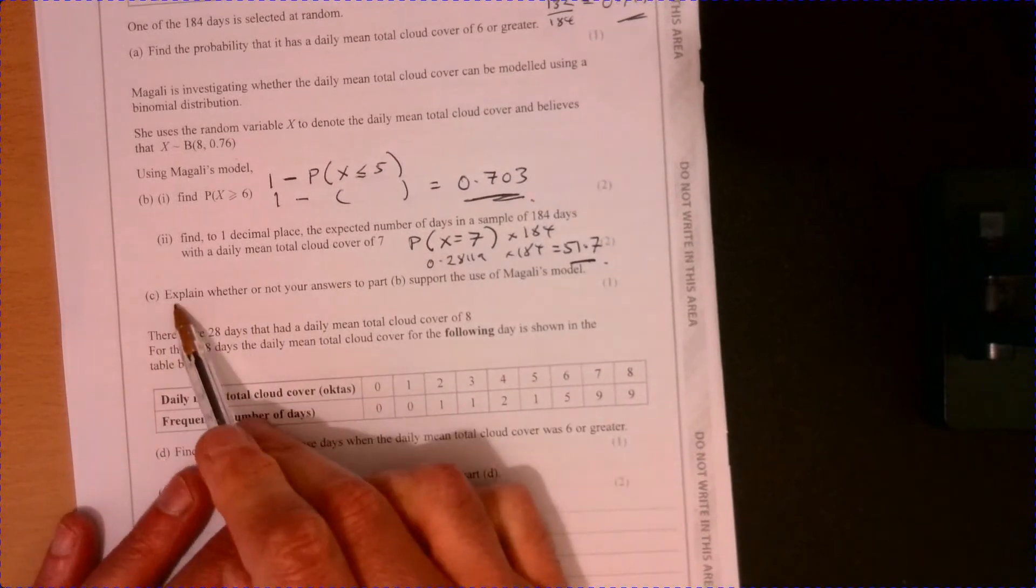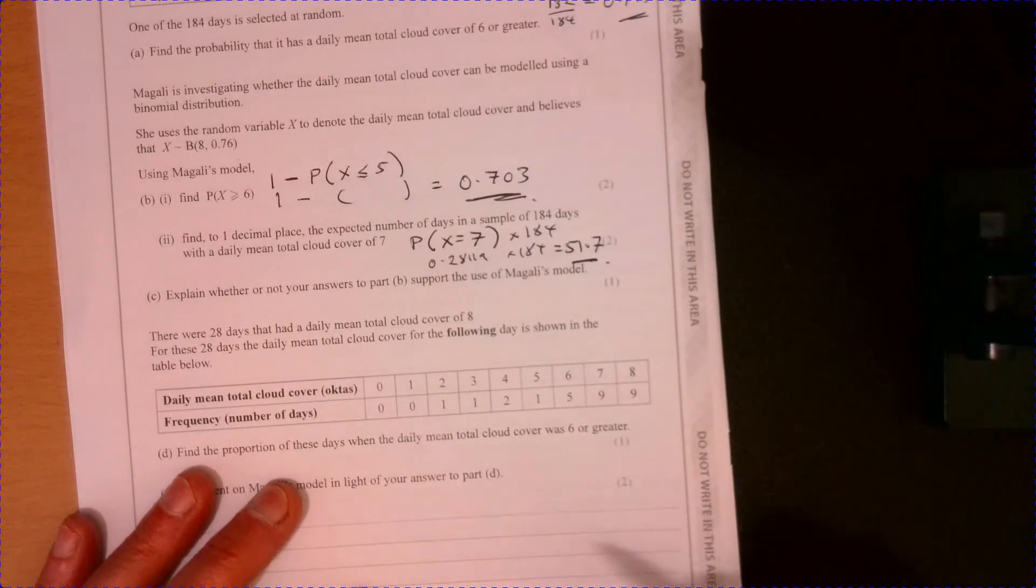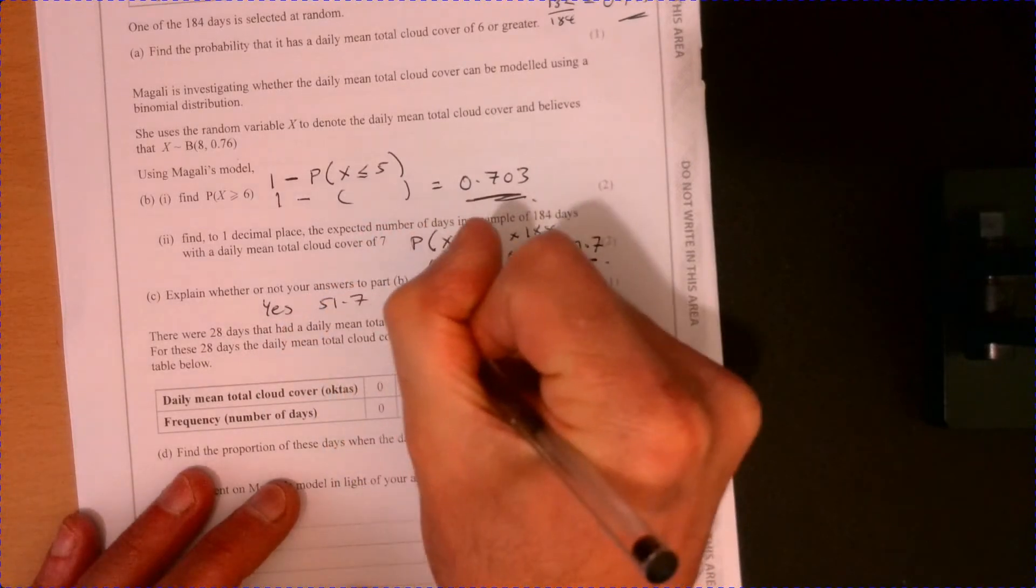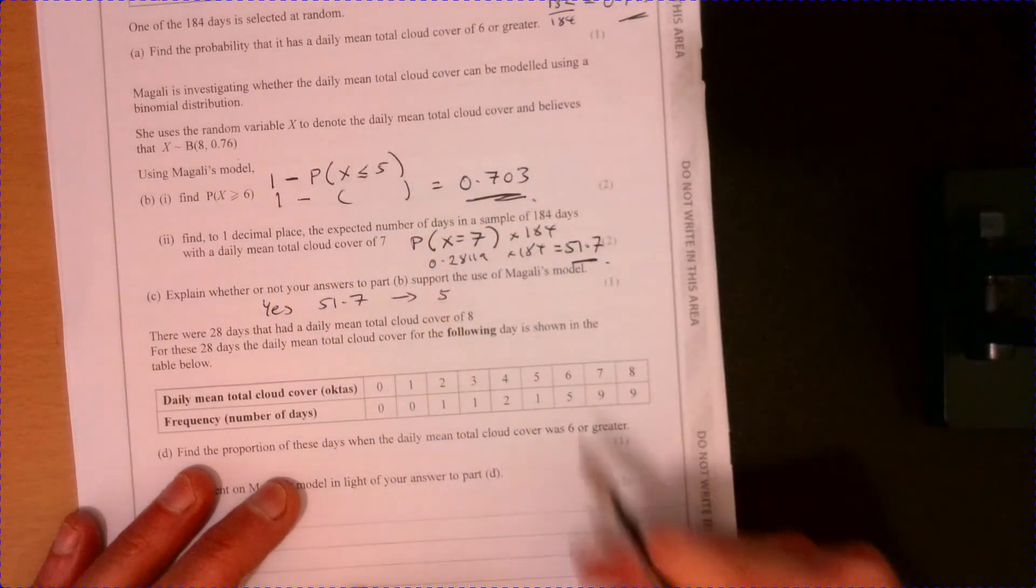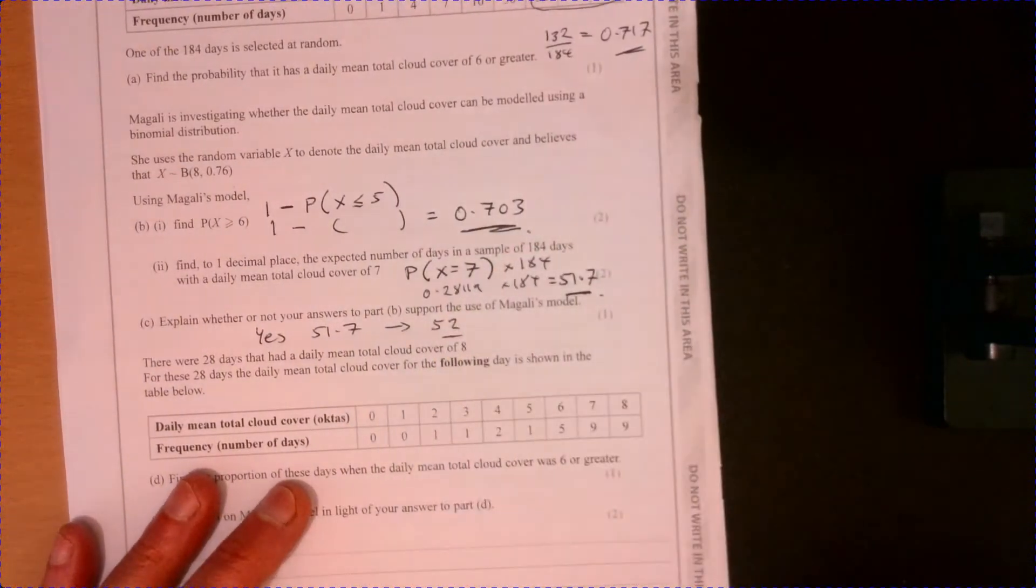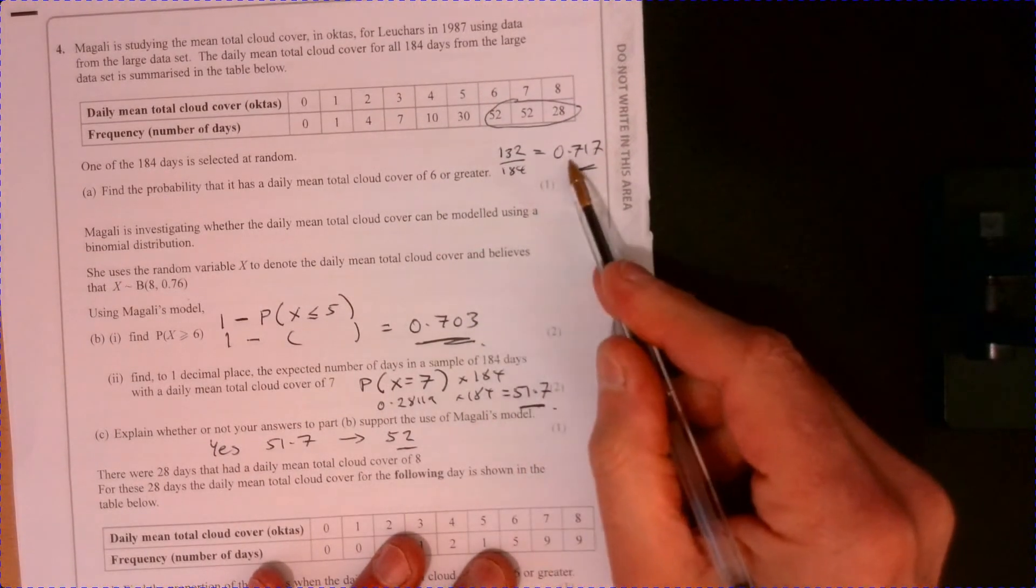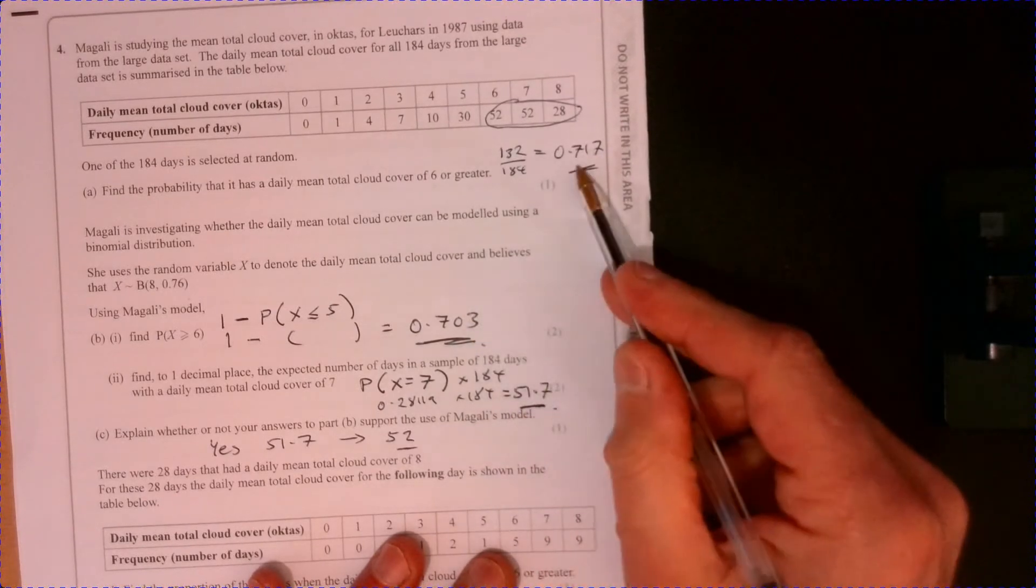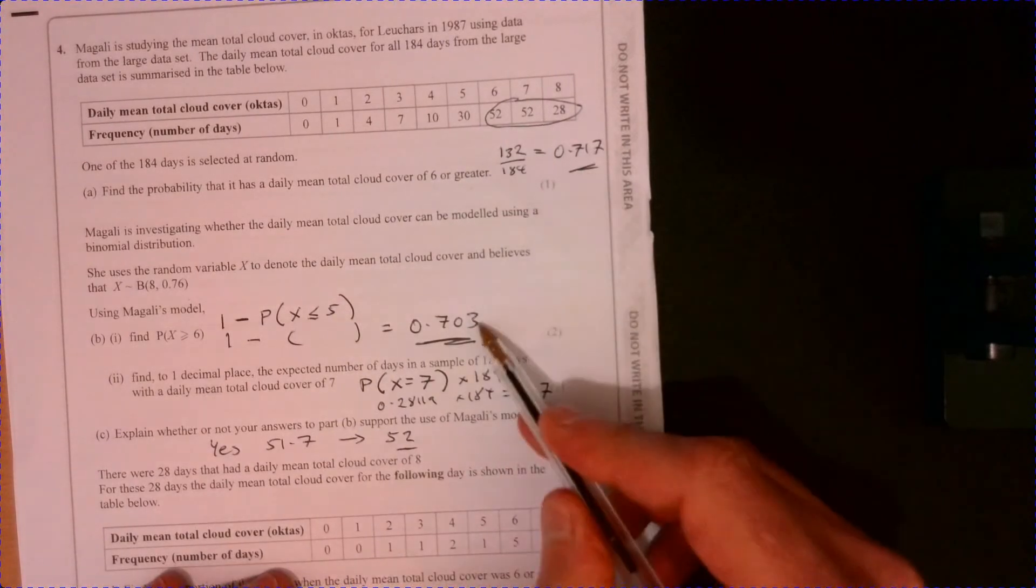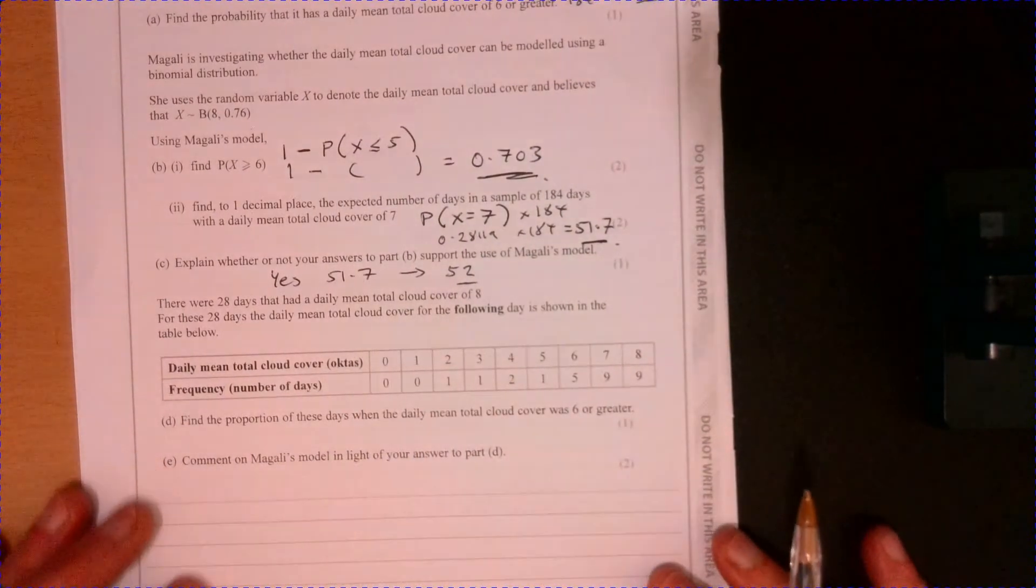All right, so part C. Explain whether or not your answers to part B support the use of our model. Well, yes, they do, because 51.7 is pretty close to 52 if I just read it from the table. That's pretty good. And also, this figure, they're working out the same thing, referring to the same thing. So I'd make reference to these as well. They're pretty close. We don't expect them to be exactly the same.